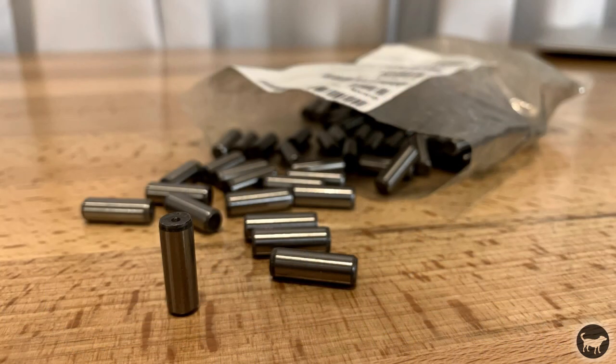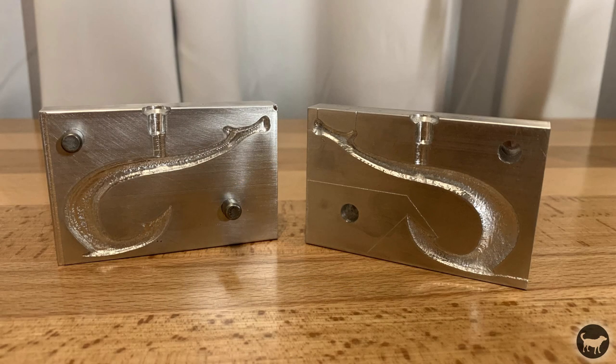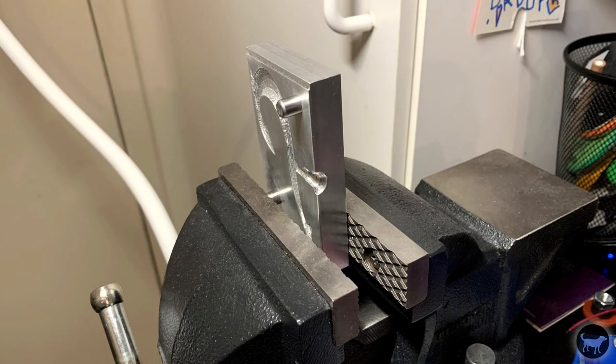Next thing I pick up is a bag of these one quarter by three quarter inch steel dowel pins that I use to register the two mold parts together. When I cut my molds, I make sure I cut one side the same diameter as these pins and use a vise to press them in after I cut my mold.